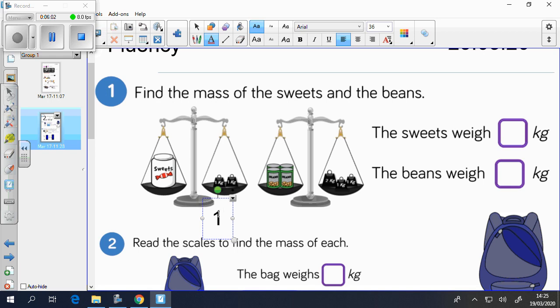We have 1 kg plus 1 kg, which is 2. So we know that the sweets weigh 2 kg. The beans weigh, you've got 2 plus 1 plus 1, which gives you 4. So the beans weigh 4 kg. I wonder if you can work out how much one can of beans weighs.